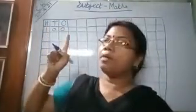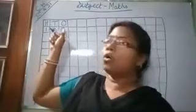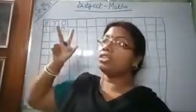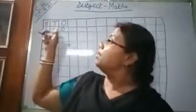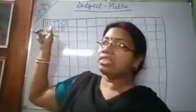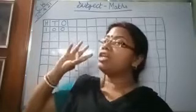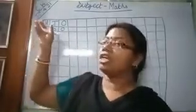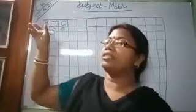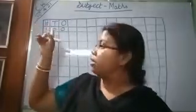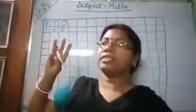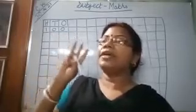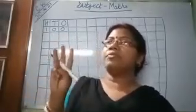Whenever there is a 1-digit number, you will write under O — that is ones. Whenever it is a 2-digit number, we will write under T for tens and O for ones. Whenever it is a 3-digit number, we will write under H-T-O. The heading will be H-T-O because 100 is a 3-digit number. Always remember this.